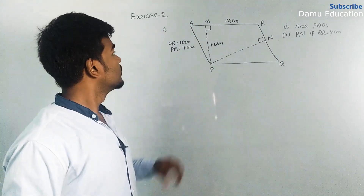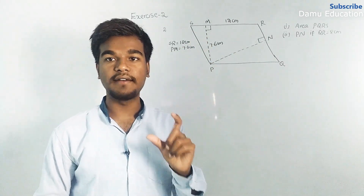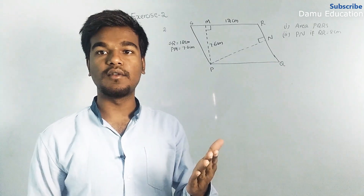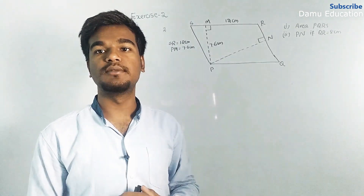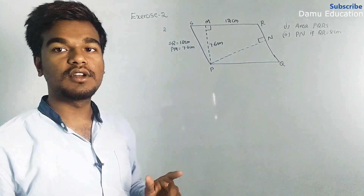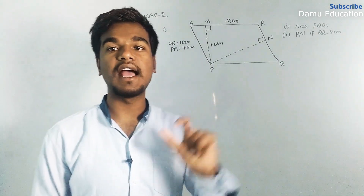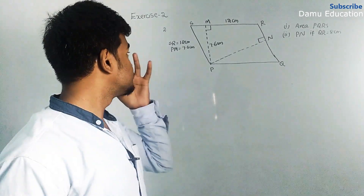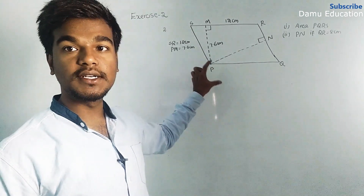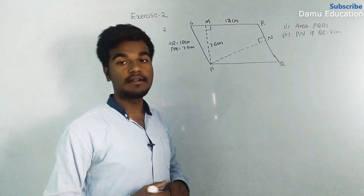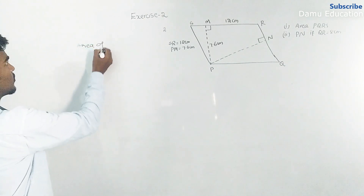Base SR is given as 12 centimeters. We need to carefully look at the figure to see what measurements are given and what we need to find. Area of parallelogram is base into height. We check which base and corresponding height are given. PM is the perpendicular height and SR is the base.